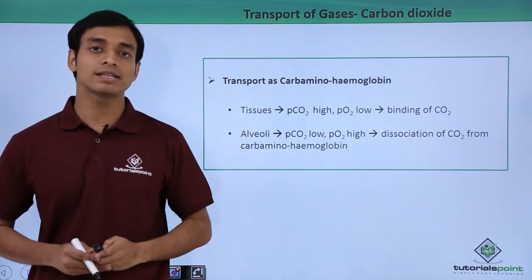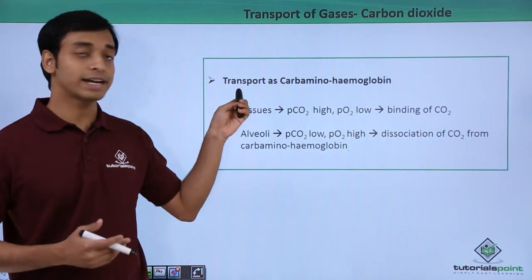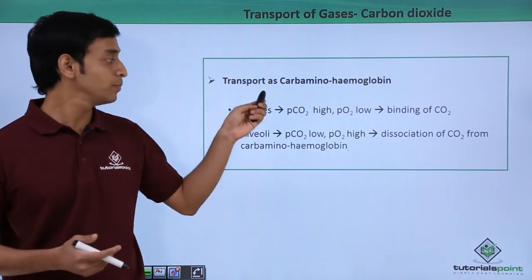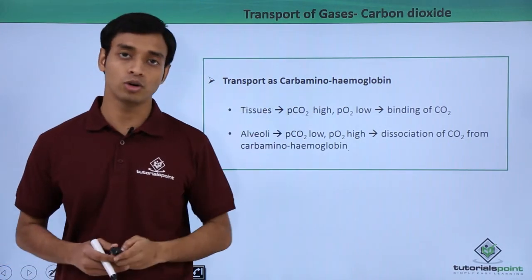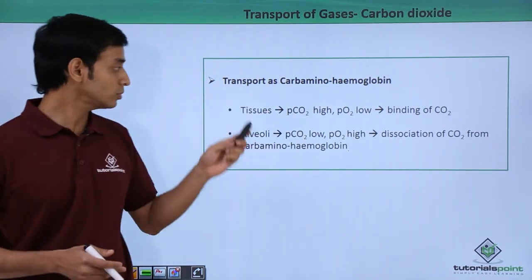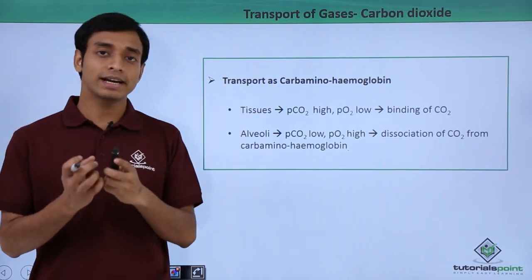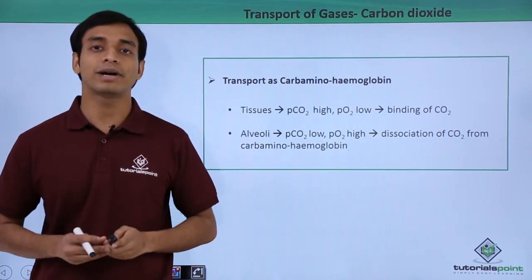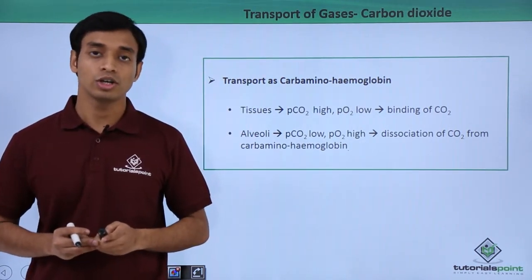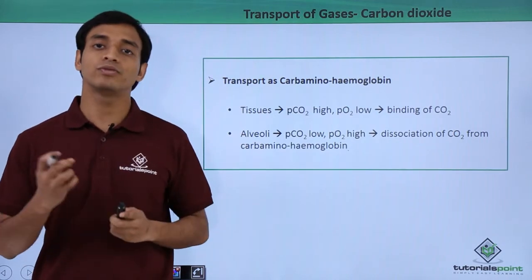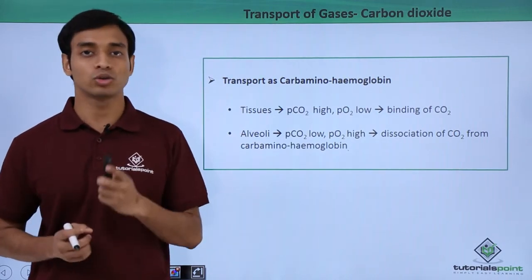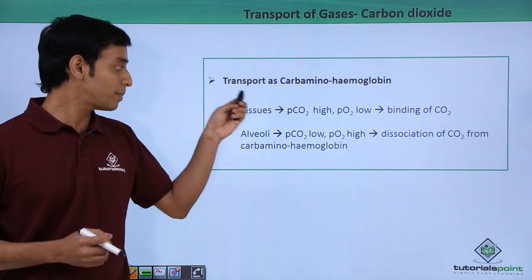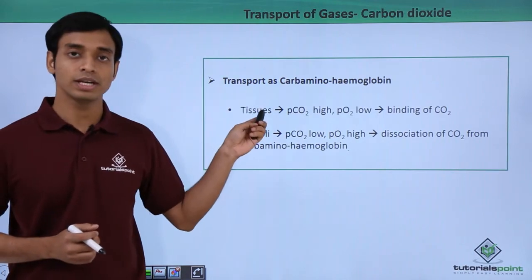Let us start with understanding how carbon dioxide is transported in the form of carbaminohemoglobin. Hemoglobin can bind to both carbon dioxide and oxygen. The carbon dioxide bound to hemoglobin is known as carbaminohemoglobin.